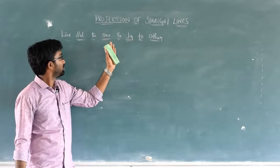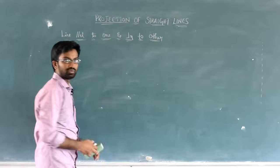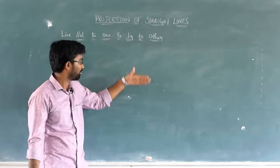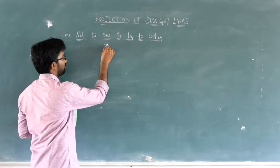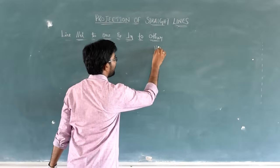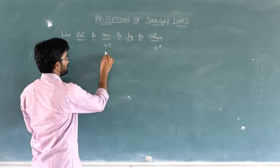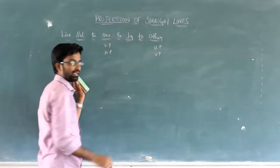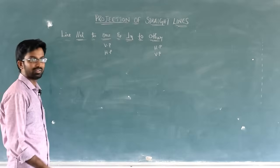So, this is the next topic: line parallel to one and perpendicular to other. Parallel to one plane and perpendicular to other plane. We have VP and HP. So, parallel to one, there are two cases. These two cases are very easy, so look at it.